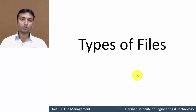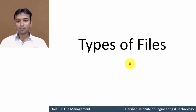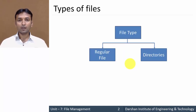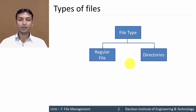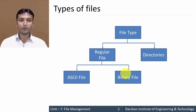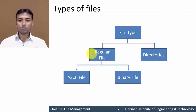In this video we will learn about different types of files. Mainly there are two types of file: either a regular file or a directory file. If we want to divide regular file further, then there are two types of regular file: either an ASCII file or a binary file. Now let us see each and every file in detail.